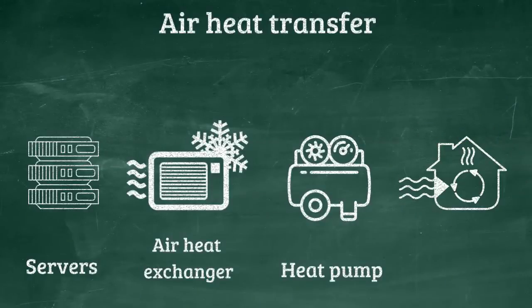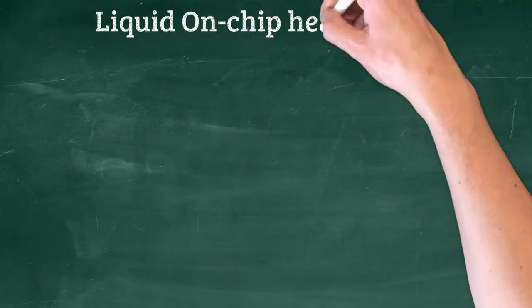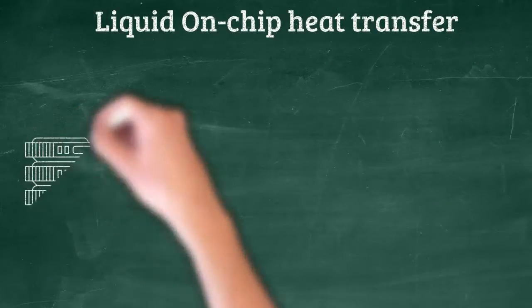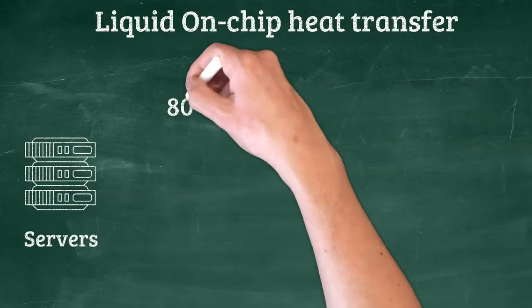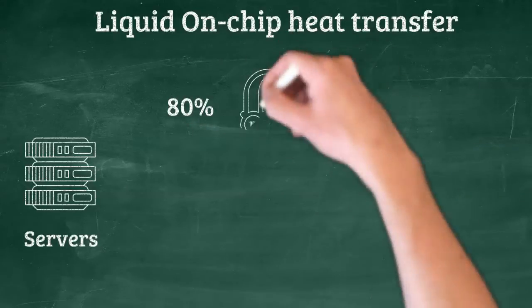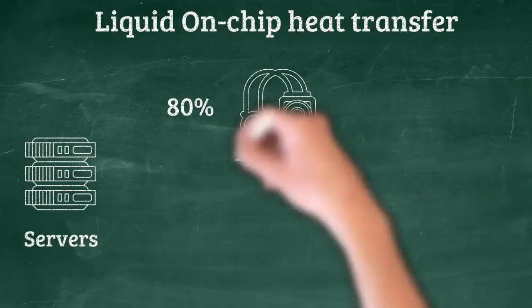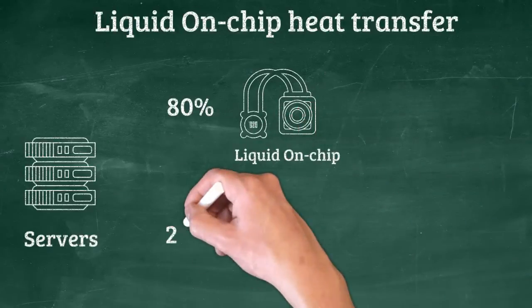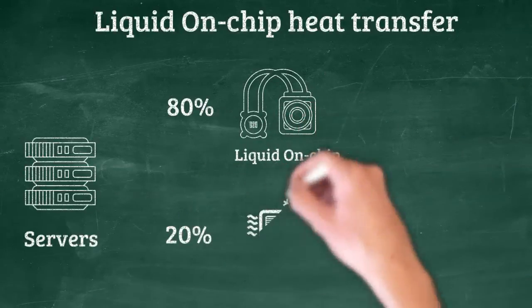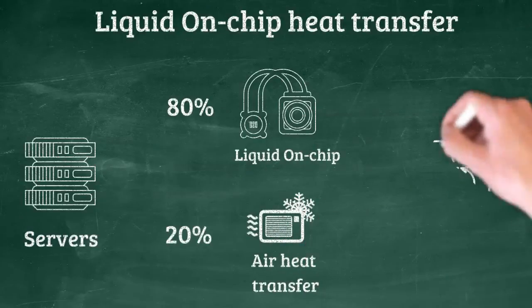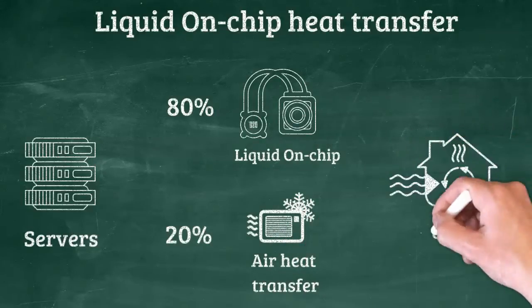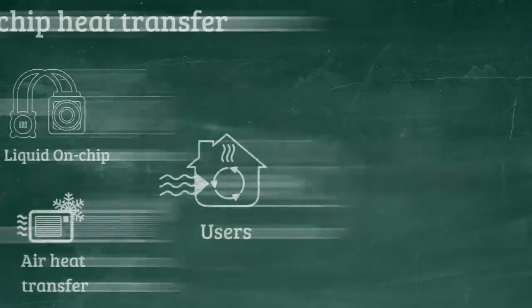With liquid on-chip heat transfer in well-managed IT servers, 80% of the heat rejection can be taken out from the chips and the rest 20% by air in conventional mode. The liquid from an on-chip solution with temperature 55-65 degrees can be directly used by householders.